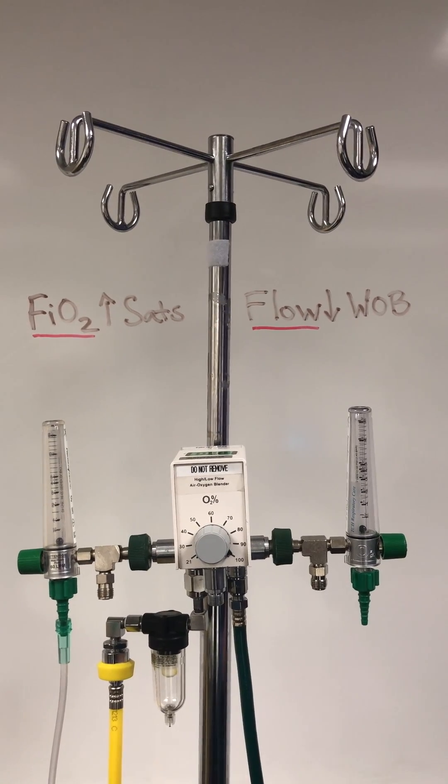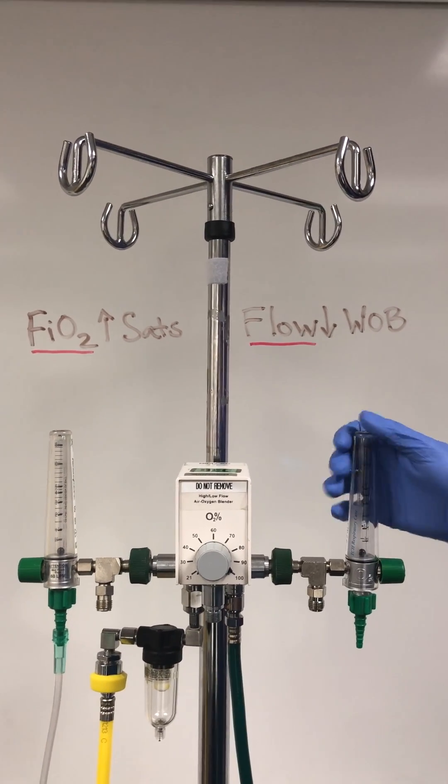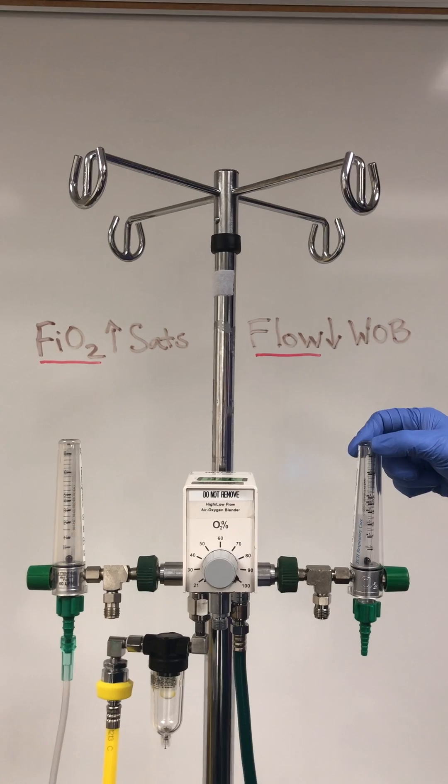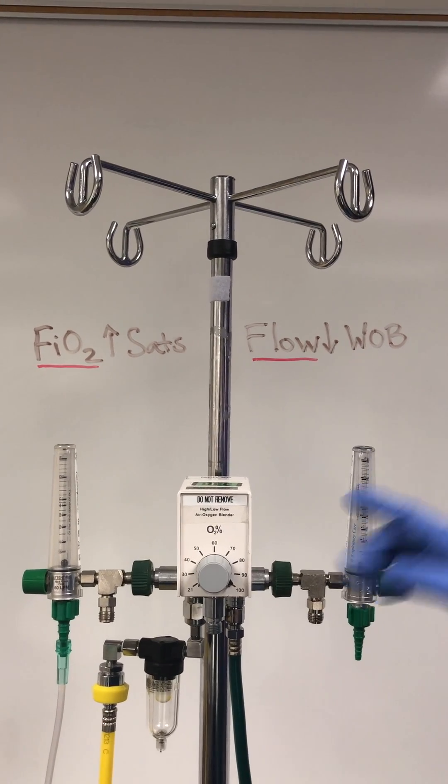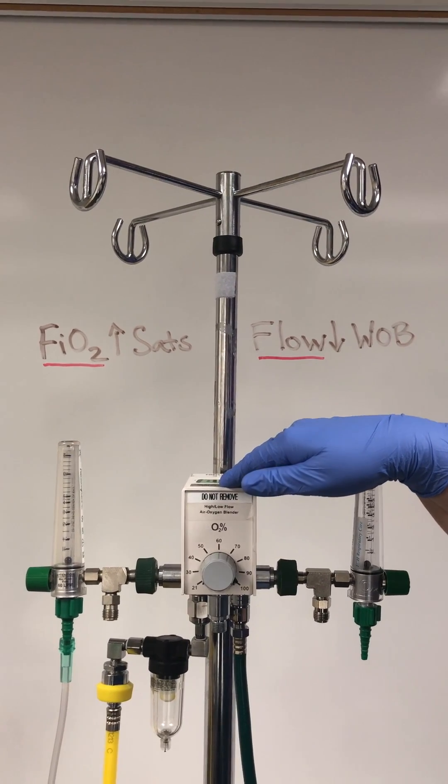High flow nasal cannula. There are two components to the high flow nasal cannula. There's a flow meter on the side, it goes from 0 to 15, and then the blender goes from 21 to 100% oxygen.